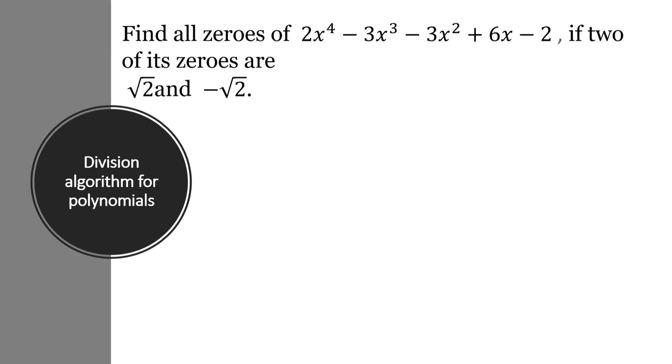What is given here? This is P of x. So P of x is equal to 2x to the power of 4 minus 3x cube minus 3x square plus 6x minus 2, and it is also given 2 of its zeros are root 2 and minus root 2. It has 4 zeros, 2 zeros are given.